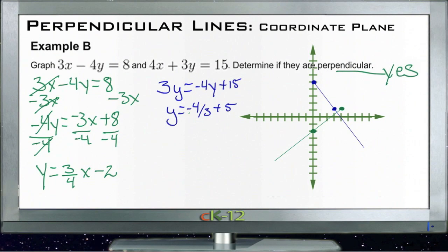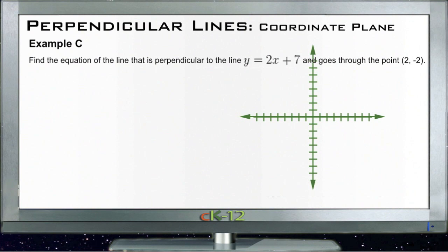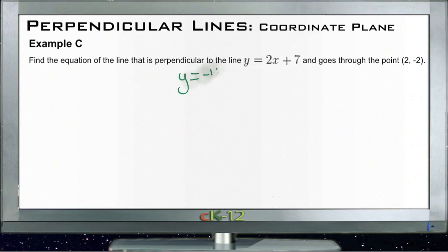Example C: find the equation of the line perpendicular to y equals 2x plus 7, going through the point (2, -2). This is very much like the first one — the perpendicular slope is the negative reciprocal, so the new line will be y equals negative 1/2 x plus whatever b is.